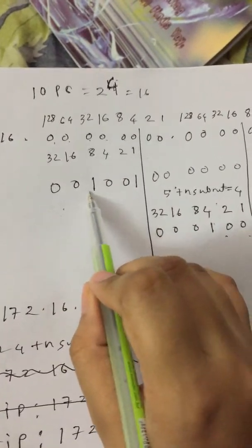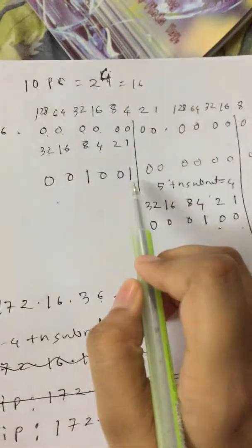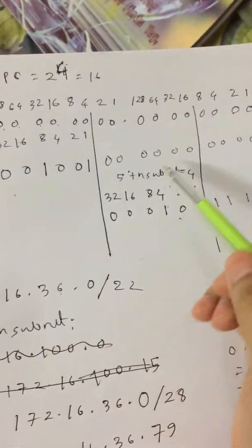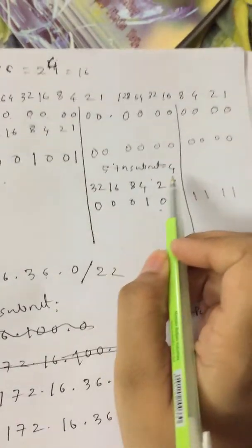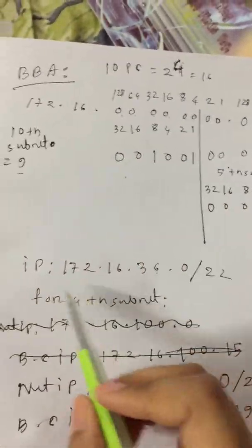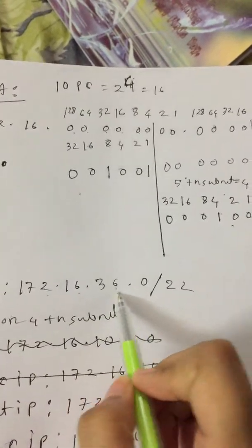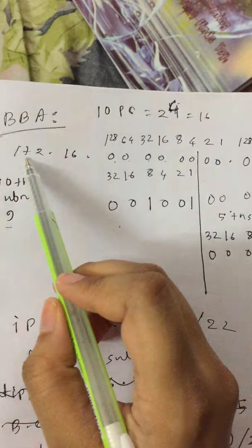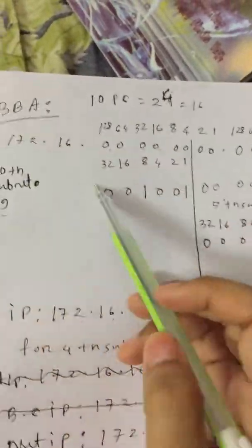Then the remaining part will be for fifth subnet. For this fifth subnet and ten subnet, we will also number here from this side, like 1, 2, 4, 8, 16, 32. As it is 10 subnets, that means 9. In binary number we will take 9 here, like 8 plus 1 equals 9.